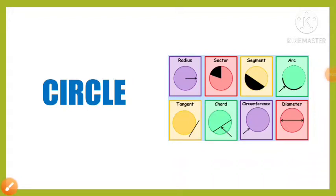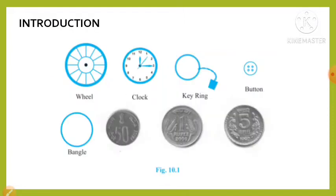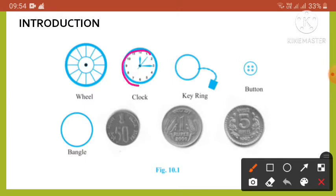Welcome, students. Today's topic is circles, that is Chapter Number 10. You may have come across many objects in your daily life which are round in shape, such as wheels of a vehicle, bangles, dials of many clocks, coins of denominations like one rupee, five rupees, fifty paisa. In a clock, the seconds hand goes around the dial rapidly, and its tip moves in a round path. That round path traced by the tip of the seconds hand is called a circle.